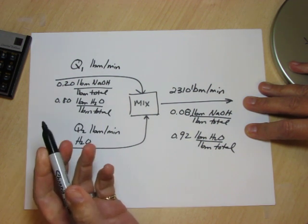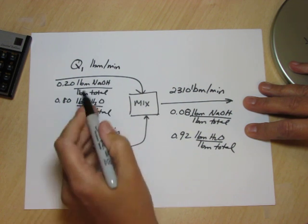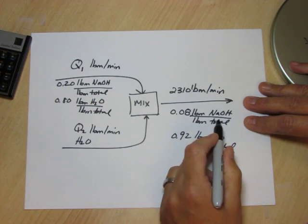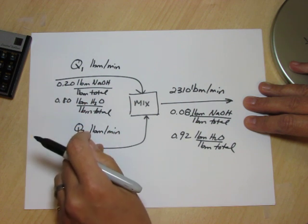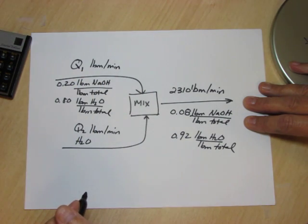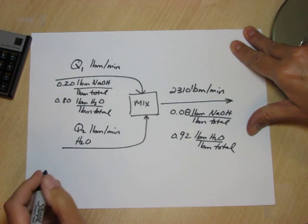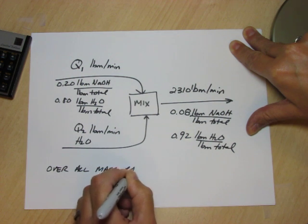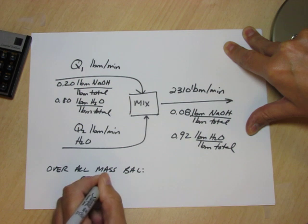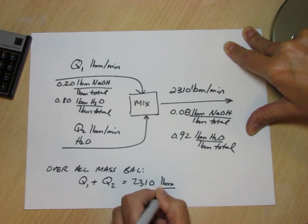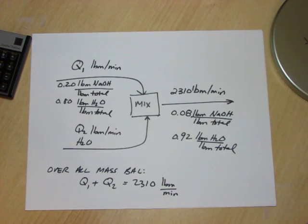So we have two types of chemicals here. We have the sodium hydroxide and we have the water. They both balance. Sodium hydroxide comes in here and leaves here. Water comes in two places and leaves one place. And of course there's always the overall mass balance. So let's start with the overall mass balance. The total mass in is Q1 plus Q2 is equal to 2310 lb/min.